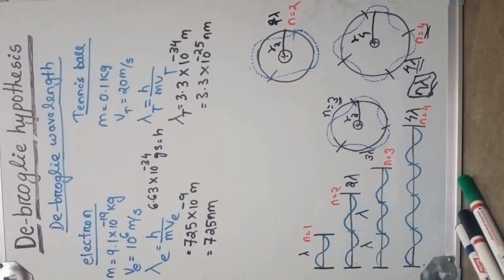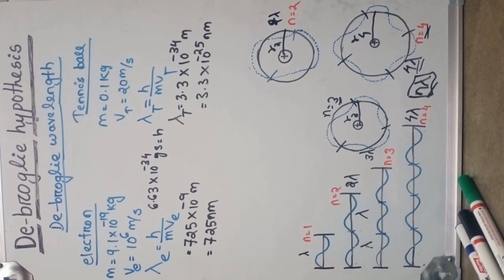The de Broglie wavelength is only applicable for microscopic particles, not for macroscopic particles. Now we calculate the de Broglie wavelength for an electron and for any macroscopic object. Take a tennis ball of mass 0.1 kg, whereas the mass of the electron is 9.1 into 10 to the power minus 31 kg.